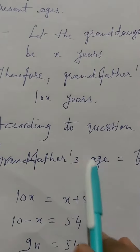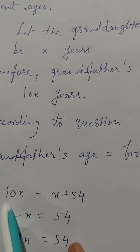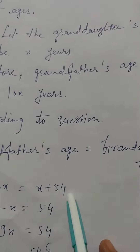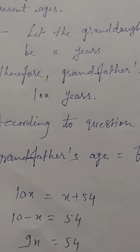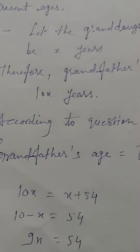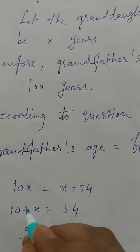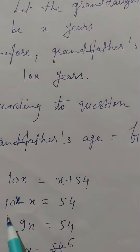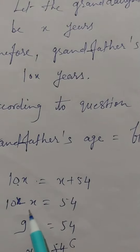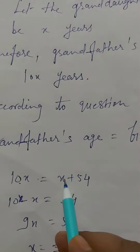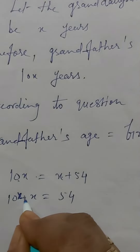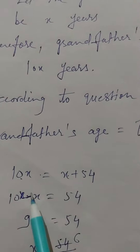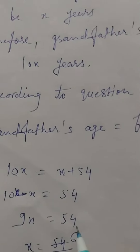So, grandfather's age 10X equals granddaughter's age X plus 54. Here we have to separate the X term. We transfer X to this side, so 10X minus X equals 54. Therefore, 10X minus X equals 9X equals 54.